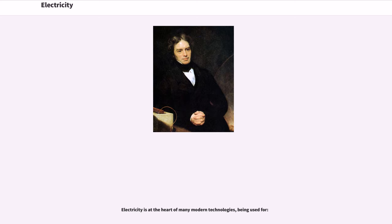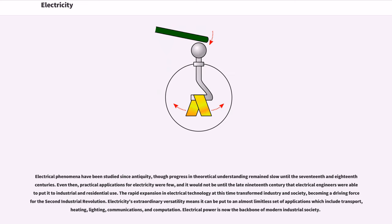Electricity is at the heart of many modern technologies. Electrical phenomena have been studied since antiquity, though progress in theoretical understanding remained slow until the 17th and 18th centuries. Even then, practical applications for electricity were few, and it would not be until the late 19th century that electrical engineers were able to put it to industrial and residential use. The rapid expansion in electrical technology at this time transformed industry and society, becoming a driving force for the second industrial revolution. Electricity's extraordinary versatility means it can be put to an almost limitless set of applications which include transport, heating, lighting, communications, and computation. Electrical power is now the backbone of modern industrial society.